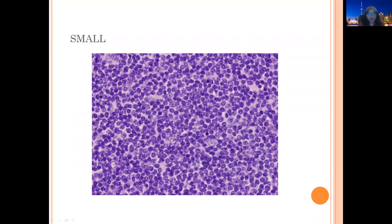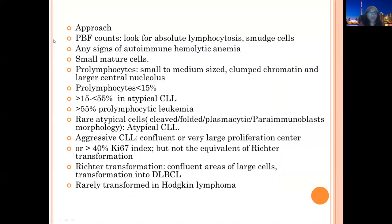This is a typical picture of small mature lymphocytes. Almost all cells are round with condensed nuclei, clumped chromatin, and very tiny inconspicuous nucleoli without any significant amount of cytoplasm. In the background there is not much mitosis, apoptosis, necrosis, or granulomas. For the CLL approach, we look at the full blood count, absolute lymphocytosis, smudge cells, and any autoimmune hemolytic picture. These small cells are approximately 7.2 micrometers — almost equivalent to mature red blood cells. We are also looking for prolymphocytes, which are small to medium sized cells with clumped chromatin and a larger central nucleolus.